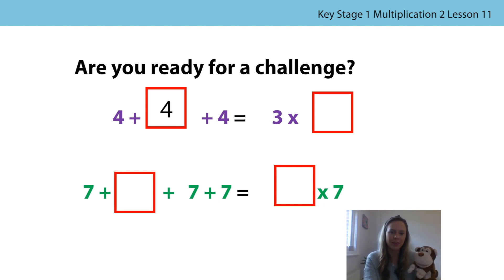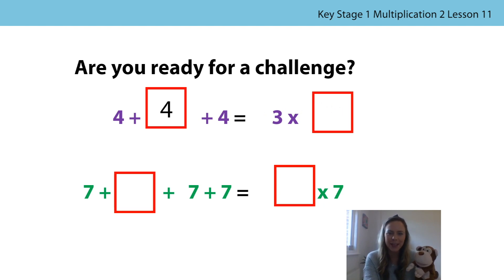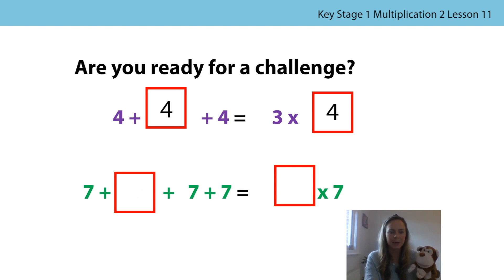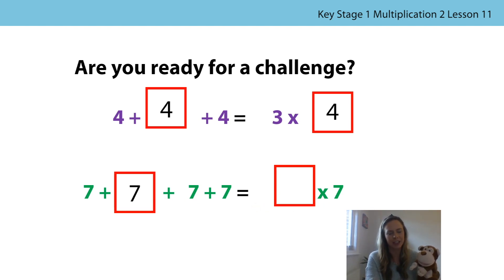We're adding groups of four. Let's have a look at our multiplication expression. It says we've got three times something — three groups of something. We've got three groups of four. Now let's look at the next repeated addition expression. We've got seven plus something plus seven plus seven. The missing number is going to be seven, because when we're doing a repeated addition, we need to have equal groups — equal groups of seven. We can write that as a multiplication expression: four times seven, because we've got four sevens or four groups of seven.